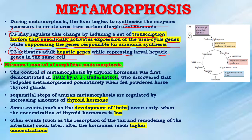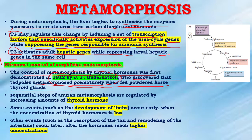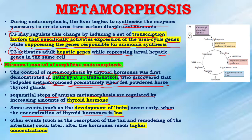Hormonal control of amphibian metamorphosis: the control of metamorphosis by thyroid hormones was first demonstrated by J.F. Gudernatsch in 1912, who discovered that tadpoles metamorphosed prematurely when fed powdered horse thyroid glands. Potential steps of anuran metamorphosis are regulated by increasing amounts of thyroid hormone. Some events, for example development of limbs, occur early when the concentration of thyroid hormone is low. Other events, for example resorption of the tail and remodeling of the intestine, occur later after the hormones reach higher concentrations.